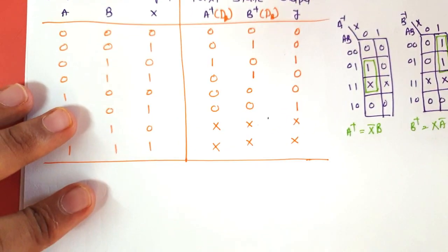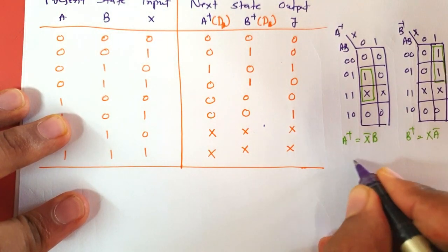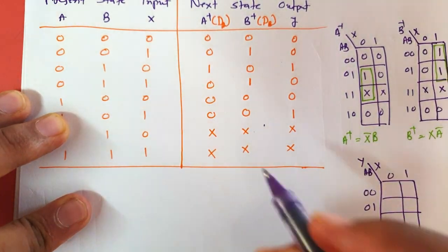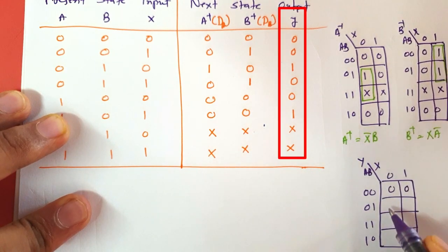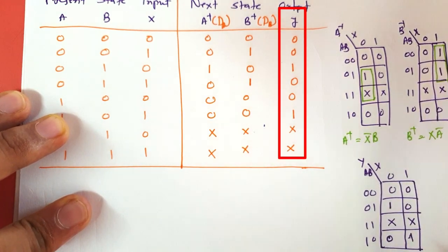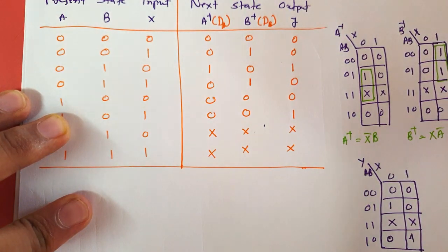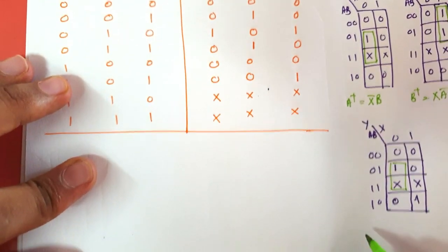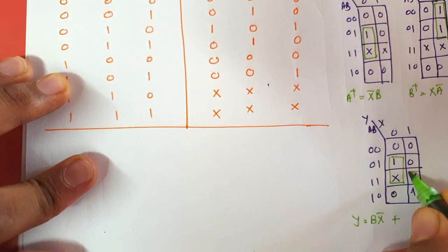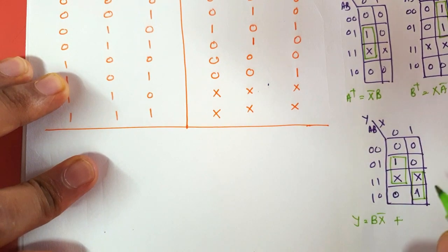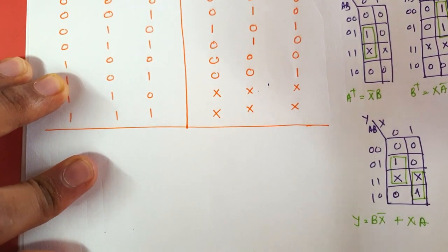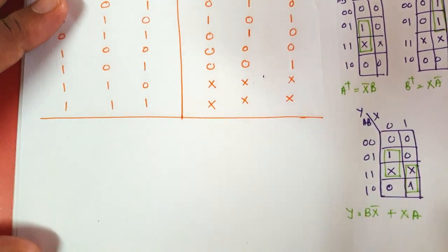Now we have A+ = X̄B, B+ = XĀ, and Y = BX̄ + XA. Now we will implement the Mealy State Machine circuit using D flip-flops, where DA = A+ and DB = B+.